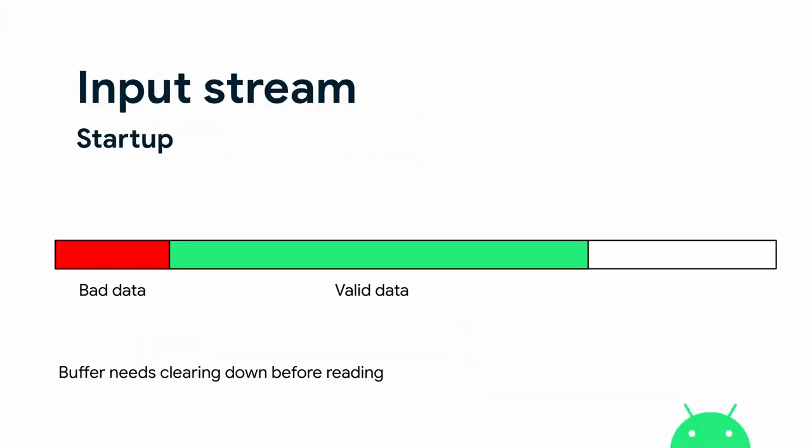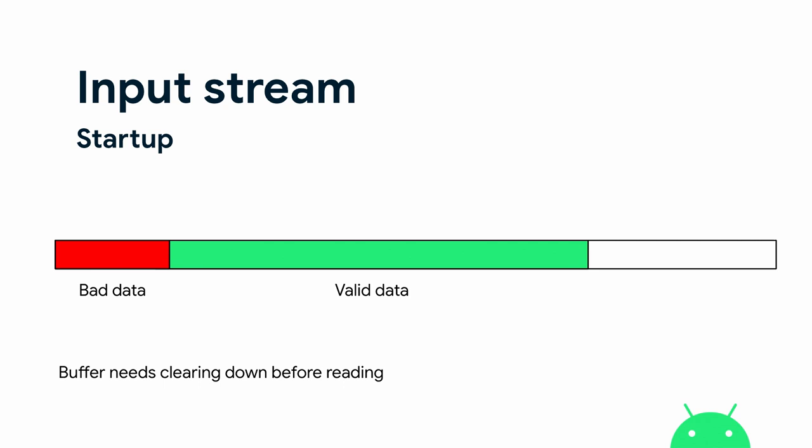After zeroing, we'll read from the input stream, do our processing on that data, and pass the processed data back to the output stream. In an ideal world, when we start the input stream we would immediately get valid data. In reality, the audio codec on the Android device takes a while to spin up, so we're likely to get bad data for the first few frames or bursts. Before we do anything, we need to clear down this input stream — but the question is how much data we need to clear before we start reading.